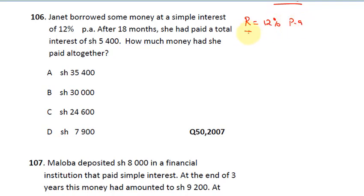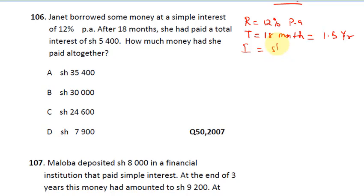The time is 18 months. Remember you have to convert to years: 18 months is 1 year and 6 months, which equals 1.5 years. The interest she paid was a total of 5,400 shillings. How much did she pay altogether? So we know the interest but need to find the principal.